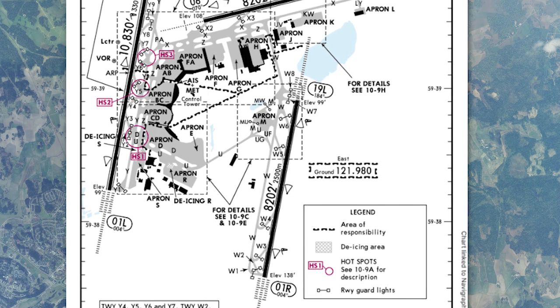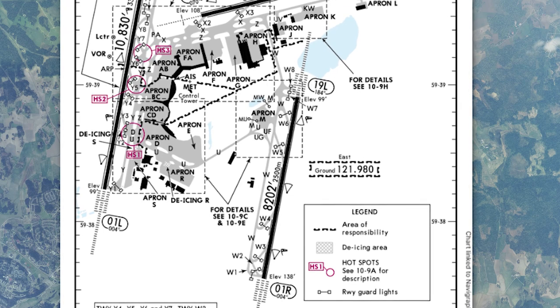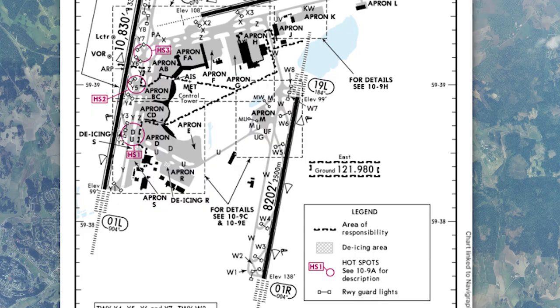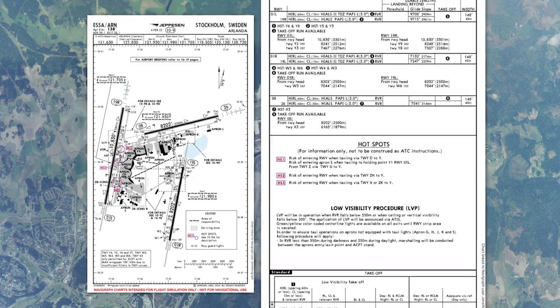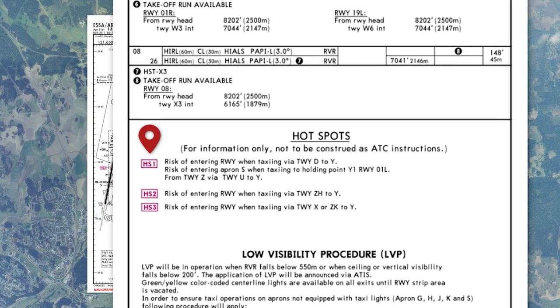If you look at the 10-9 page for Stockholm, Sweden, you can see there's a multitude of hotspots — HS1, HS2, and so forth. HS1 says: risk of entering runway when taxiing in runway delta to Yankee. These hotspot notes bring attention to the pilot for heightened awareness — I've got to be careful in these areas.